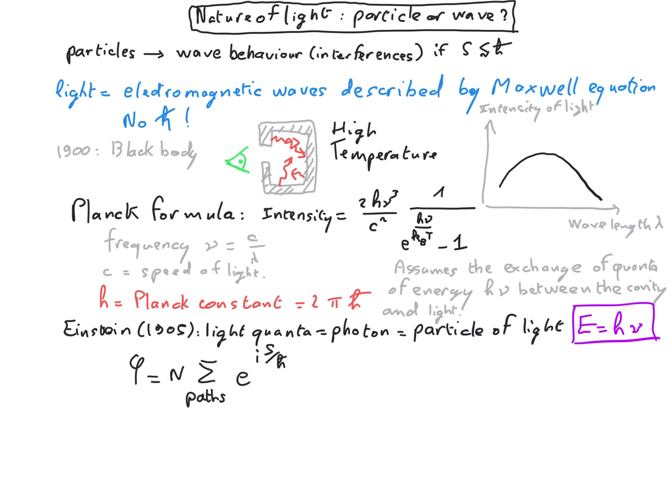In order to express the amplitude of probability for the photon, the particle of light, to go from one event to another.